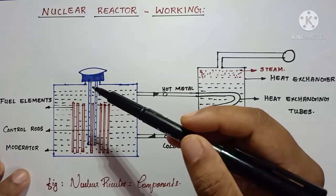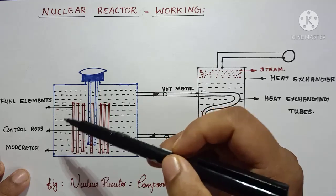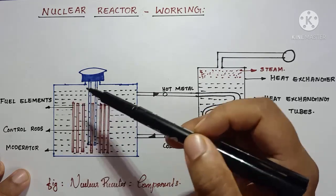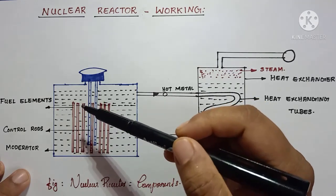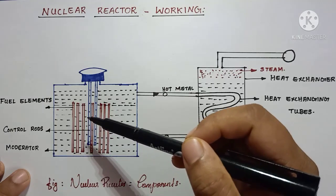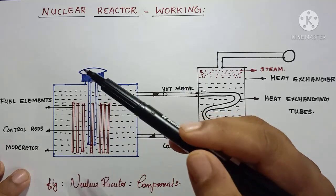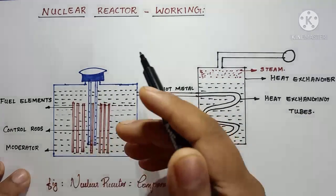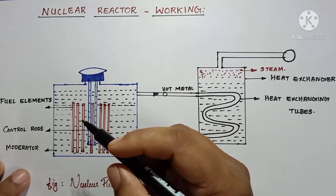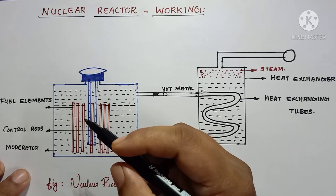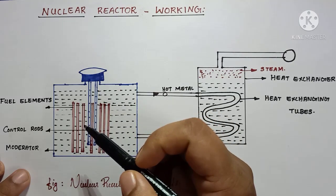Whenever the thermal electrons bombard with the fuel elements, many number of new electrons with large amount of heat will generate. If we use ordinary water as a moderator, then water molecules will sometimes oppose the flow of these electrons. They can restrict the movement of electrons. Thereby, the speed of movement of electrons can be controlled by using ordinary water as a moderator.